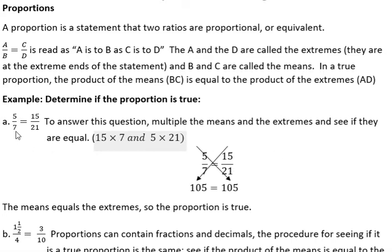So here's one, 5 is to 7 as 15 is to 21. To answer that question, we multiply the means, which is 7 times 15, and the extremes, which is 5 times 21, and see if they equal.